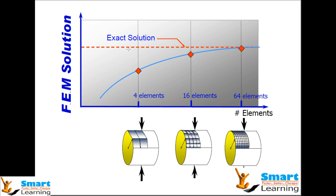If you see the exact solution — shown by the red line here — your finite element solution can get close to the exact solution based on the mesh refinement. For example, if you have a cylindrical object and mesh it with four elements, you cannot capture the curvature well. If you increase to 16 elements, you get closer to the exact line. If you keep increasing to 30, 64, 120, or 200 elements, you will get very close with nearly zero percent error compared to the exact solution.